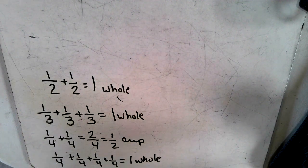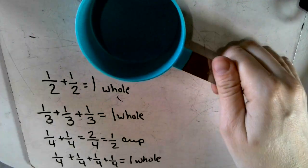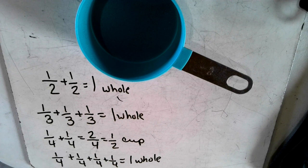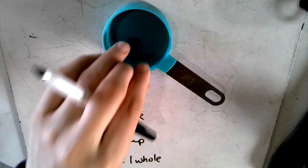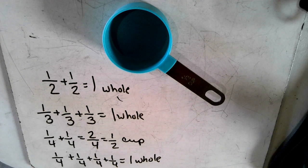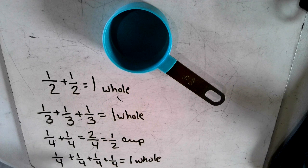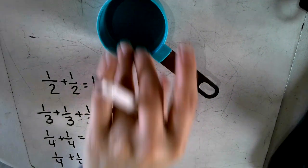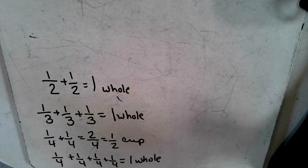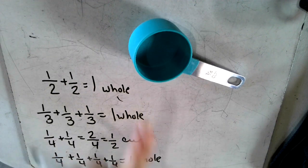Or if you needed a whole cup, you could do three of your third cups. If something calls for two thirds, you just do two of your one thirds. If something calls for three fourths, you use three of your one fourths.